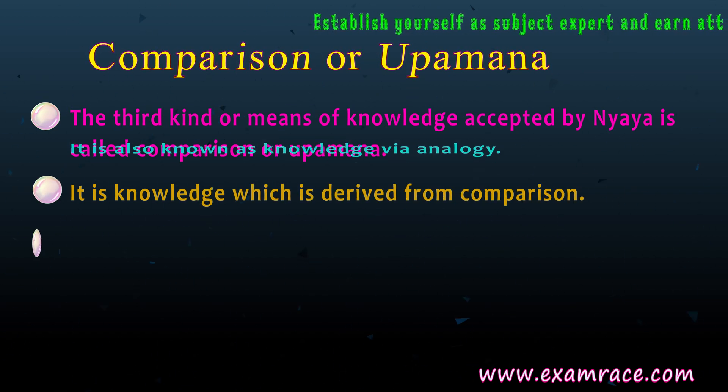It is important to note that Buddhism reduces the authority of the pramana of comparison or Upamana to perception and verbal testimony or Shabda. The Sankhya and the Vaisheshika schools of Indian philosophy reduce the authority of the pramana to inference or Anumana. The Jaina, on the other hand, reduce the authority of comparison to recognition or Pratibhijna. The Mimamsa school of Indian philosophy accepts the independent authority of the means of knowledge of comparison, but their understanding of Upamana is different from the manner in which the Nyaya school accepts it.